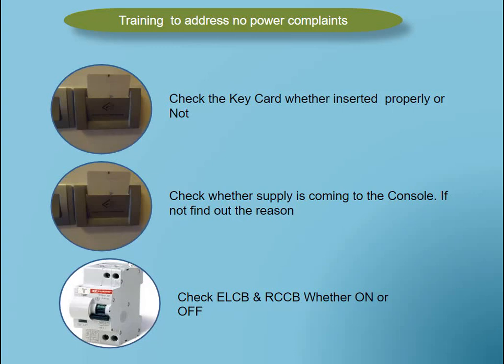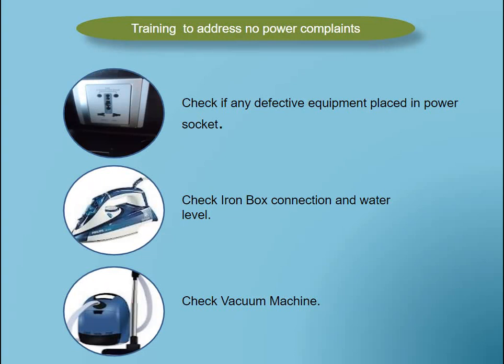From the key card check he moves to the second step: check whether supply is coming to the console; if not, find out the reason. Third, check the ELCV or RCCV — whether on or off — which is available inside the guest room above the false ceiling. Also check if any defective equipment is placed in the power socket. If the RCCV or ELCP has tripped, the reason could be a faulty iron box, faulty vacuum machine, or some other charger causing the trip.